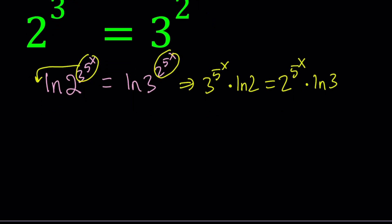Now we have 2 exponential expressions whose exponents are the same, so that's good. Otherwise, it's going to be impossible to solve. If you bring those together, let's go ahead and divide them like this. 3 to the power 5 to the power x divided by 2 to the power 5 to the power x equals ln 3 over ln 2.